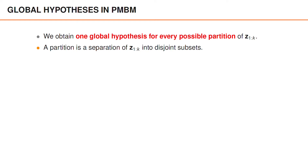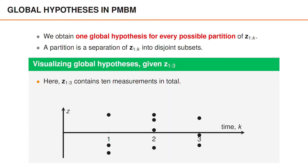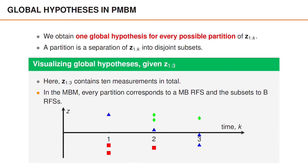This may seem complicated at first, so let's look at what a partition is in an example. Consider the measurement sets Z1 to Z3 illustrated in the figure, which contain 10 measurements in total. One partition of Z1 to Z3 is illustrated in this figure, where we have separated the measurements into three disjoint subsets marked with diamonds, squares, and triangles respectively. For every possible partition, we obtain a multi-Bernoulli random finite set in the multi-Bernoulli mixture. In this case, the multi-Bernoulli process contains three Bernoulli components, one for each subset in the partition. The Bernoulli random finite set distributions are then determined by the measurements in the corresponding subset.